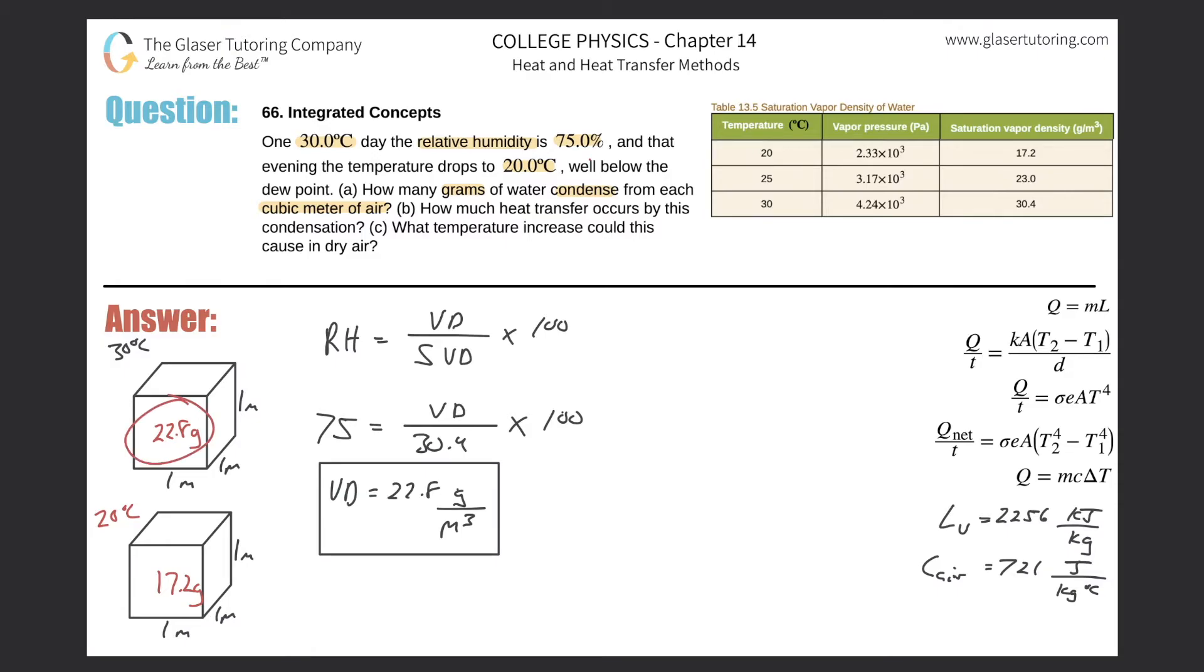So wait a minute. During the day, the air has 22.8 grams in it. And now at night, the maximum amount can only be 17.2. Where does it go? Well, it condenses, right? That's the dew. When you go outside and you see the water on the cars and the grass and whatever, that's the dew.